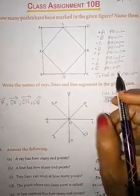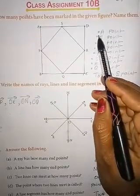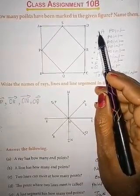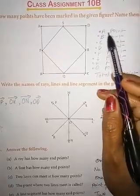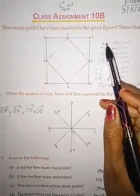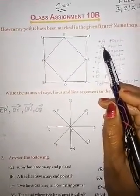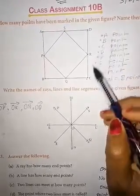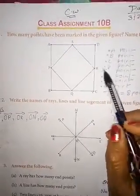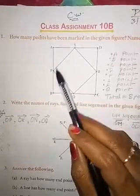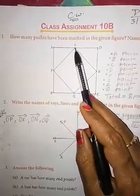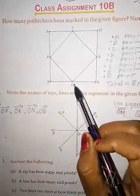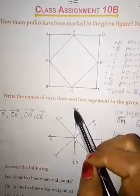Now name the points. A point is represented by a simple small dot. First point A, second point B, third point C, fourth point D, fifth point P, sixth point S, seventh point R, eighth point Q.